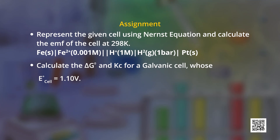I hope you have understood the concepts explained in today's discussion. Before we conclude, let me leave you with an assignment. You are expected to apply the understanding from today's discussion and solve two numericals: represent the given cell using the Nernst equation and calculate the EMF of the cell at 298 Kelvin; and calculate ΔG° and Kc, the equilibrium constant, for a galvanic cell whose E° cell is equal to 1.10 volt. Have a nice day.